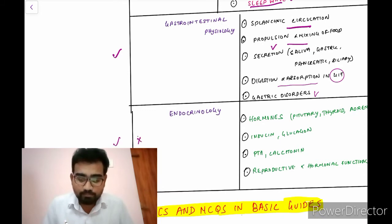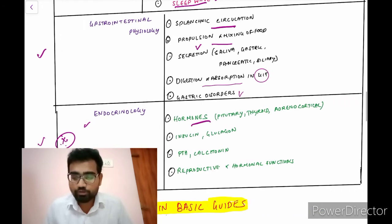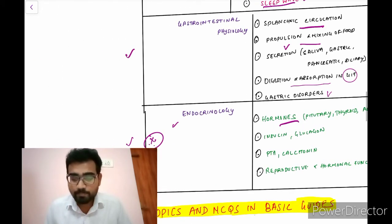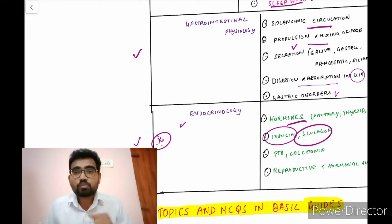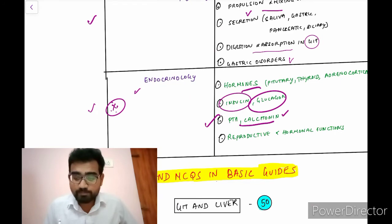And last, very important, endocrinology. You should know about the hormones, the pituitary, adrenocortical thyroid hormones. And then you should know very important, insulin. What are the functions of insulin? And glucagon. What is glucagon? What are the functions of glucagon? And another very important, parathyroid hormones and calcitonins. What is the relationship between the two and what it does? And what is the effect of these on calcium metabolism? And the last but not least is reproductive and hormonal functions.